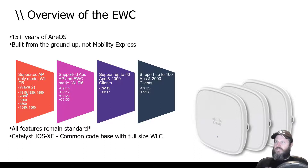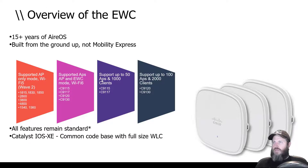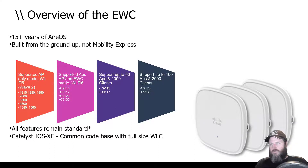They've also since announced the 9105s — a smaller model and a 9105 wall plate — which will be added to this list. I'm not sure how many APs they'll support, but I'd assume they'll probably fall into the 50 AP limit. The 9115 and 9117 support around 50 APs, while the higher-end 9120 and 9130 get you up to 100 APs or 2000 clients.